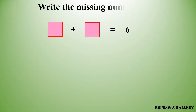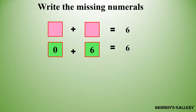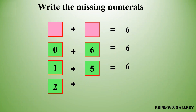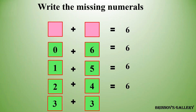Write the missing numerals. Two plus four is equal to six, or three plus three is equal to six. We can choose any option from these possibilities to fill the missing numerals.